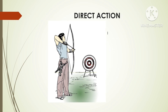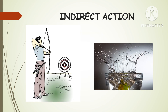Imagine a skilled archer shooting an arrow directly at the target. The arrow hits the bullseye, causing immediate and direct damage to the target. Here, the archer represents the ionizing radiations, the arrow represents the ionizing particle or photon, the target represents the DNA molecule, and the bullseye being hit directly by the arrow represents the DNA being directly damaged by the radiations.